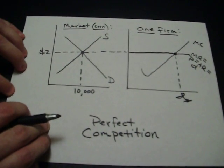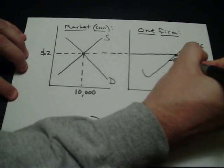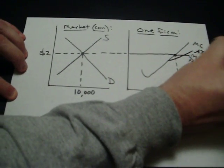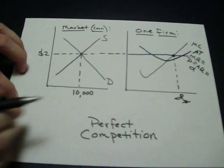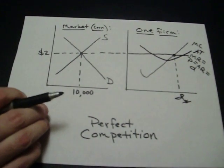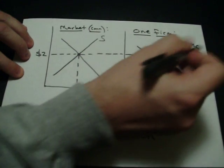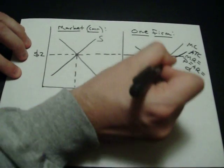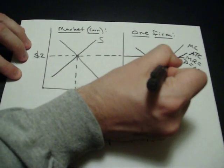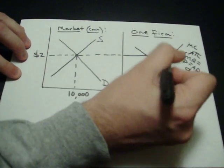One more thing I'm missing is the average total cost curve. I'm going to put average total cost down here. It looks like a U shape. Now we want to find the profit of the business. From Q star, I'm tracing up to the first thing that we hit, which is the average total cost curve.